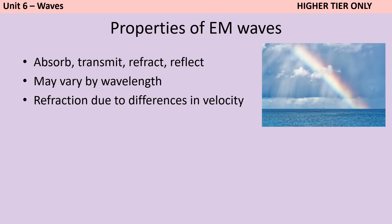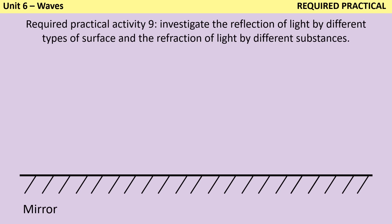Different substances can absorb electromagnetic radiation, transmit it, refract it so it changes direction, or reflect it — and the way in which they do this may depend on the wavelength. For example a red object reflects red wavelengths of light but absorbs all other wavelengths of visible light. Some of these effects like refraction are due to differences in the velocity of the waves in different substances — the wave travels at a different speed in a substance with a different density.